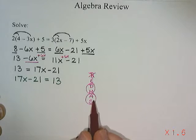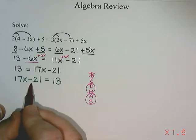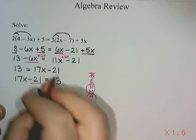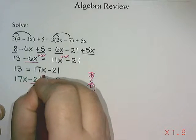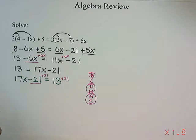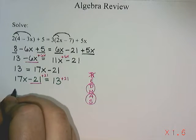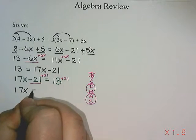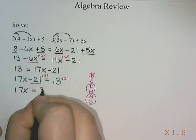So here the first thing I'm going to move is addition and subtraction. I have a subtract 21, so I'm going to do the opposite and add 21 to both sides. So I have 17x left over, and 13 plus 21 is 34.